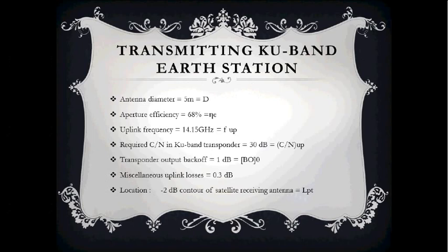For the transmitting KU-band Earth station: antenna diameter is 5 meters, aperture efficiency is 68%, uplink frequency is 14.15 GHz, required C/N in the KU-band transponder is 30 dB, transponder output backoff is 1 dB, miscellaneous uplink losses are 0.3 dB, and station location is on the −2 dB contour of the satellite receiving antenna.